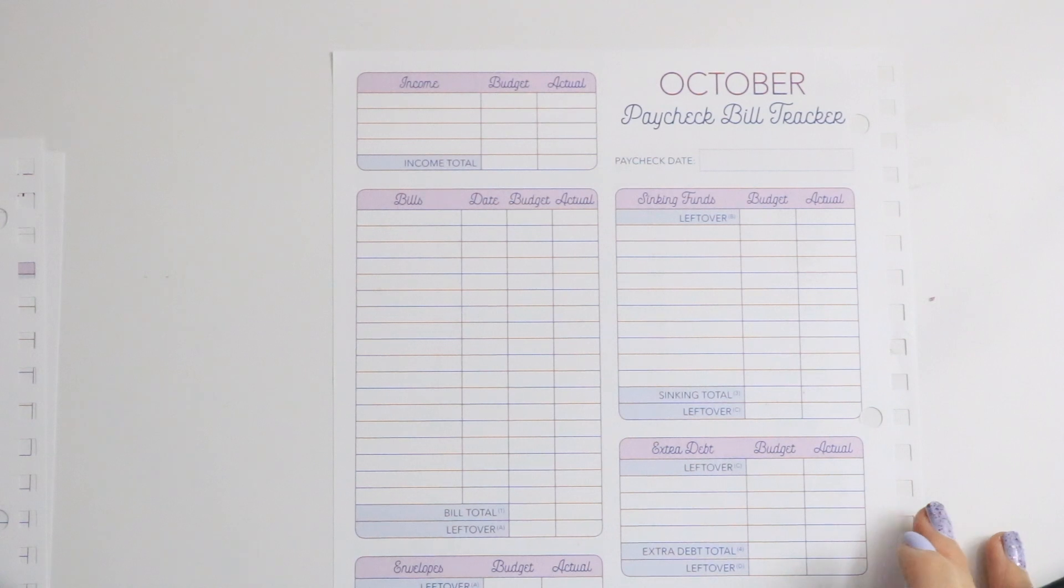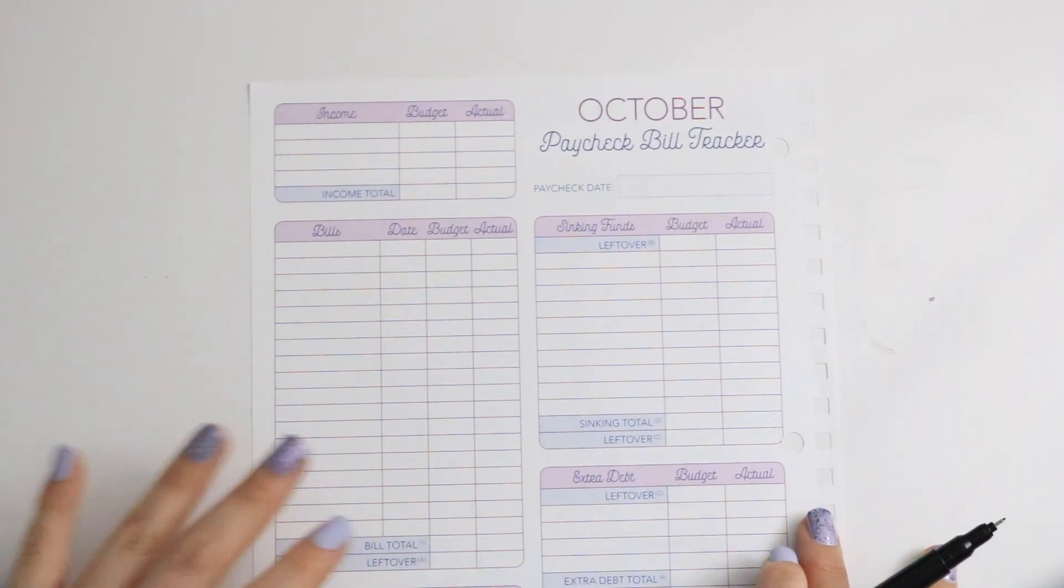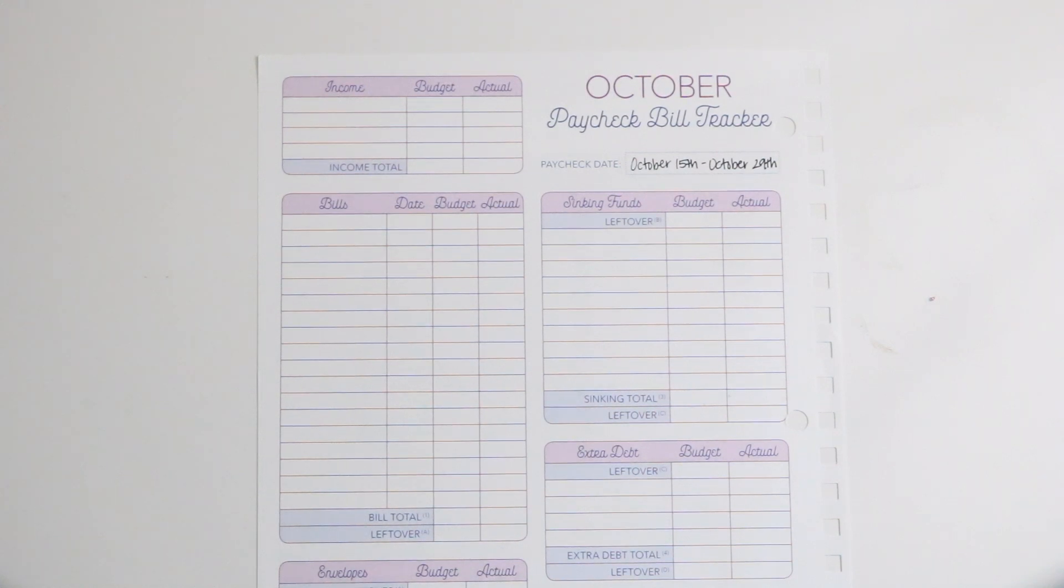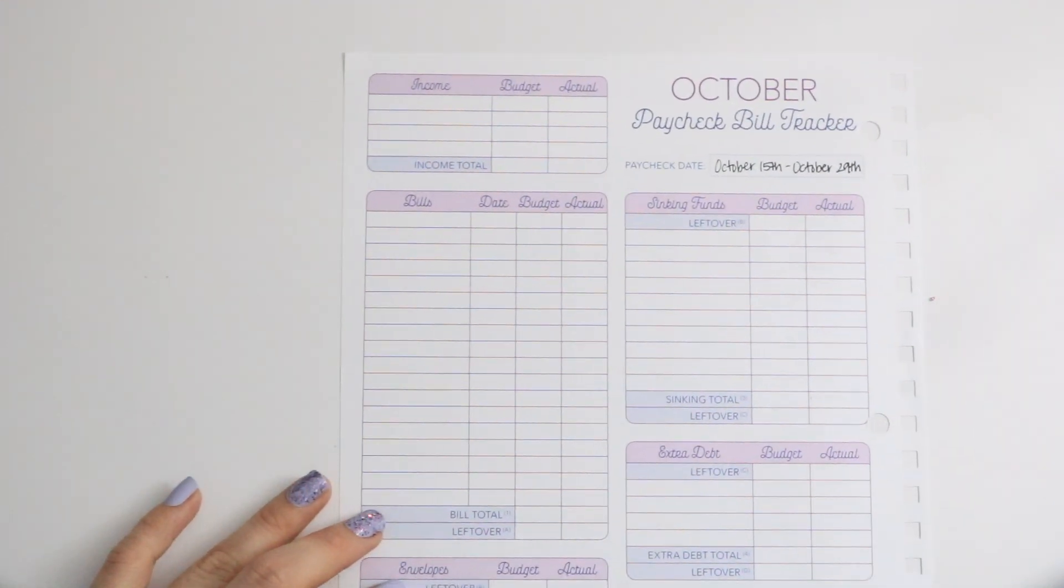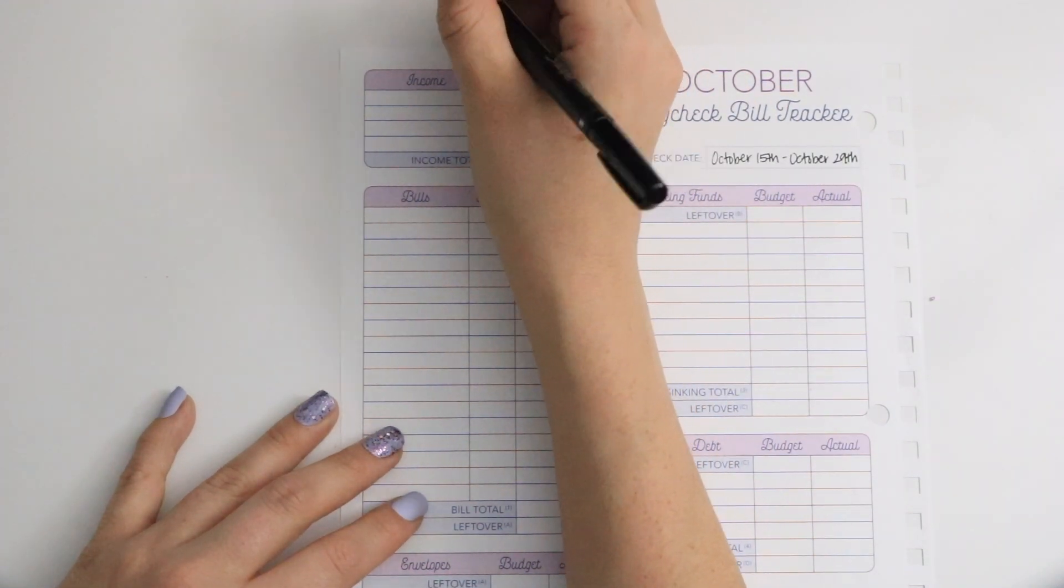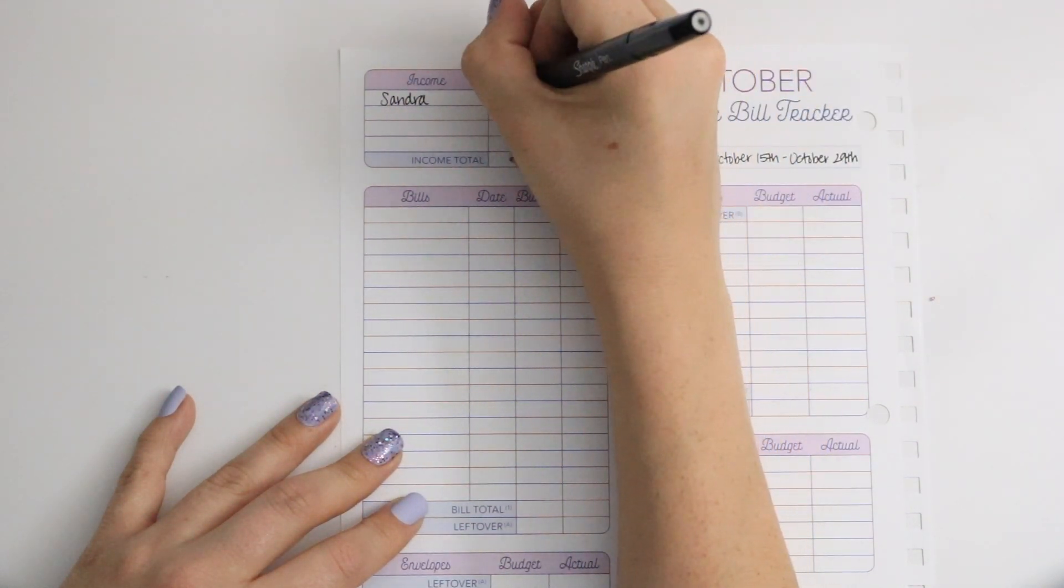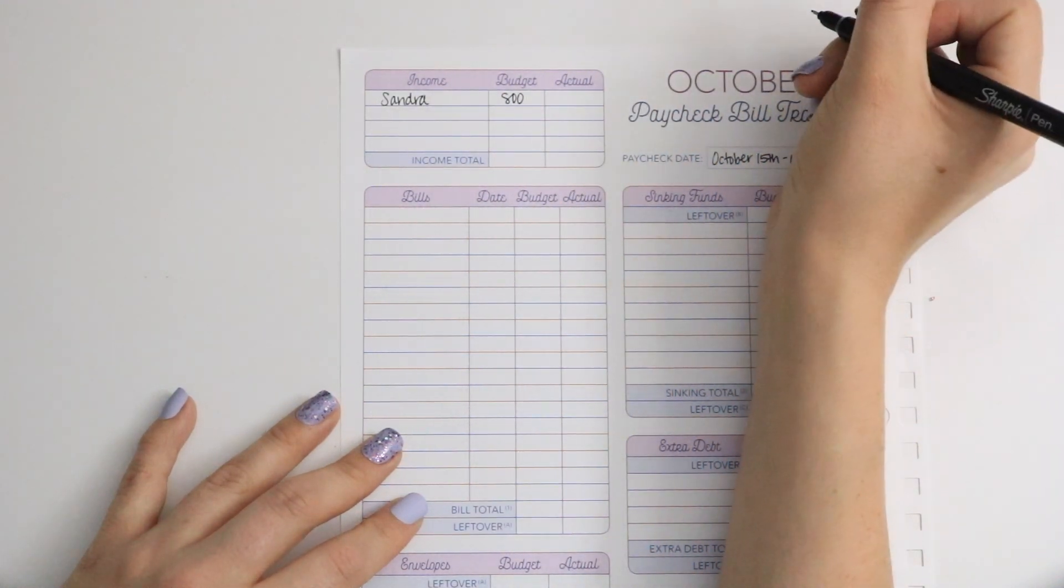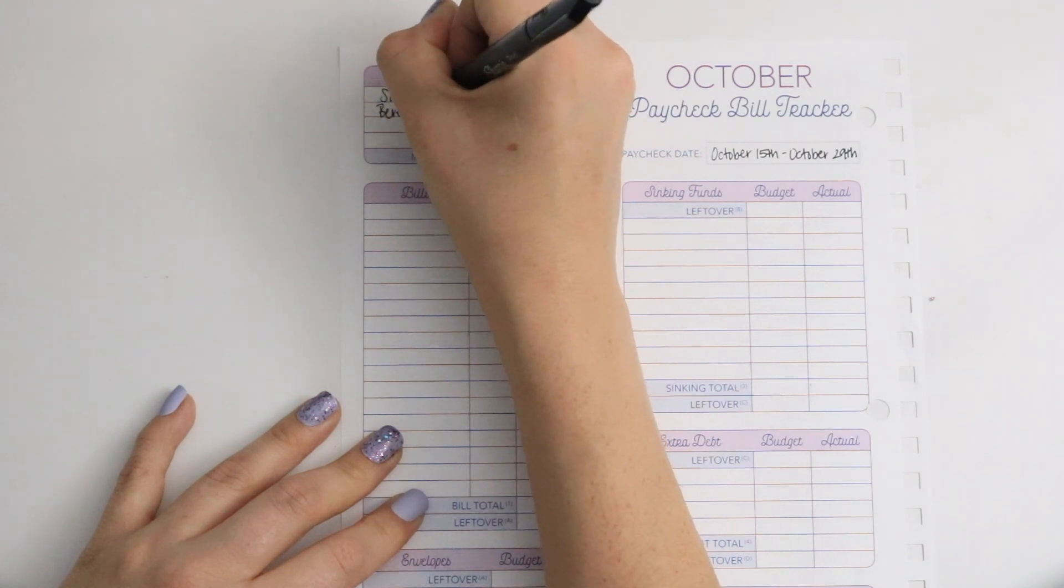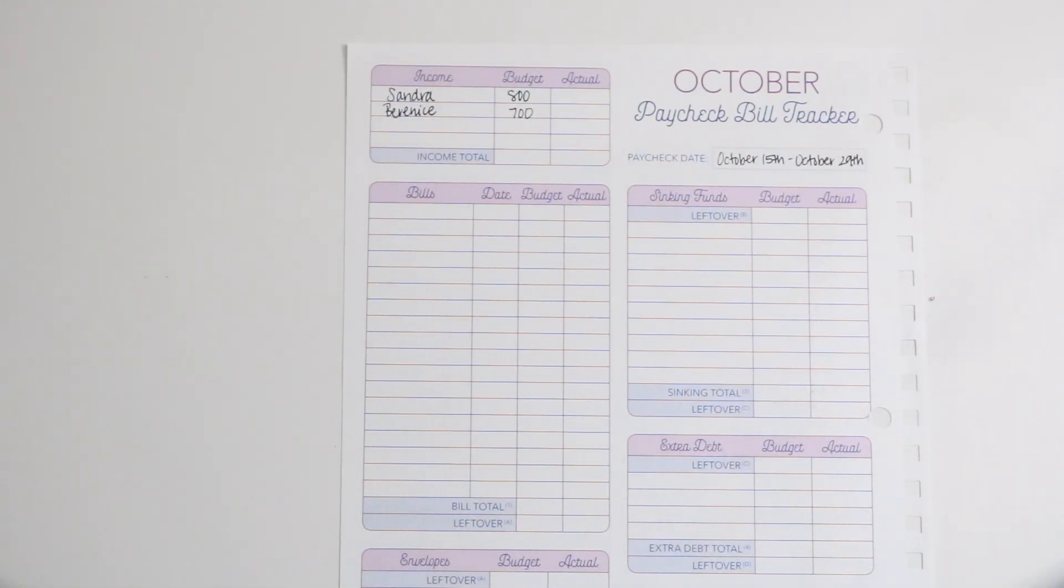Let's get into the bills. This paycheck will be from October 15th to October 29th and we're going to write in our incomes, which there are two incomes that I use. First one is Sandra, she is putting in $800, her normal, and then it is me and I usually do $600 but this time I am doing $700 into the account.